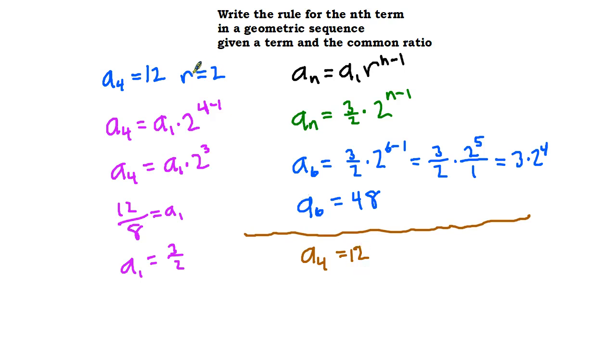So what's going to happen is r equals 2, that's what we multiply each term in the sequence by to get the next term. So just multiply by 2 to get a sub 5.